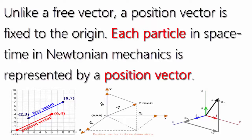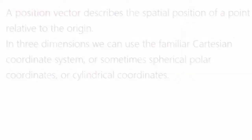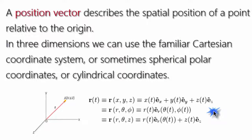Each particle in space-time in Newtonian mechanics is represented by a position vector. A position vector describes the spatial position of a point relative to the origin. In three dimensions we can use the familiar Cartesian coordinate system, or sometimes spherical polar coordinates, or cylindrical coordinates.